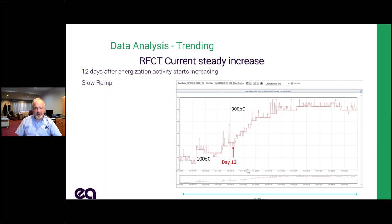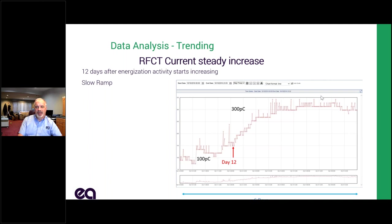Here's a picture of RFCT data showing actual picocoulomb readings. Because we've got a cable going through the CT bore, we can count the electrons and give a direct reading in picocoulombs. In this example, readings went from 100 to 300 picocoulombs in a matter of days — 12 days after energizing. It stayed under 100 for the first 10 days and then ramped up. I can't tell you when it's going to fail or what the cause is, but I can tell you that's not normal. When you see that, you can either ignore it or take some sort of action.